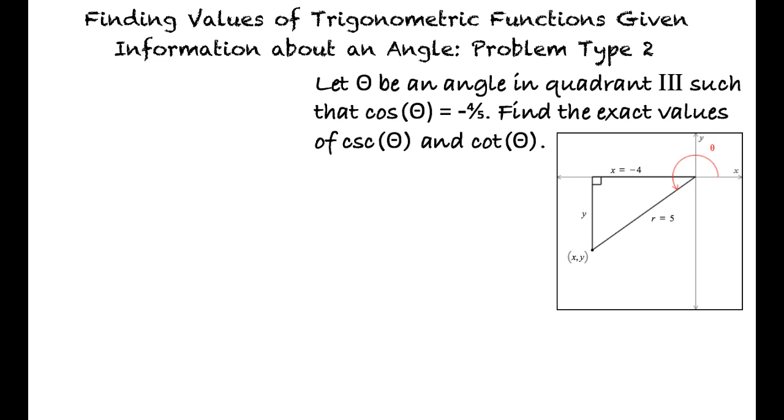The cosine is equal to the adjacent over the hypotenuse. Thus, the values of x and r are given to be negative 4 and 5 respectively.